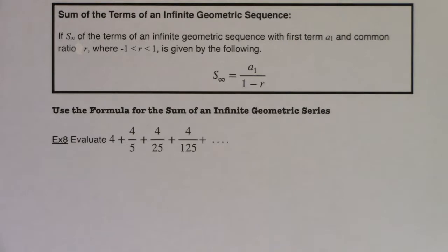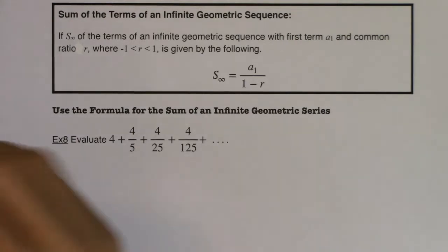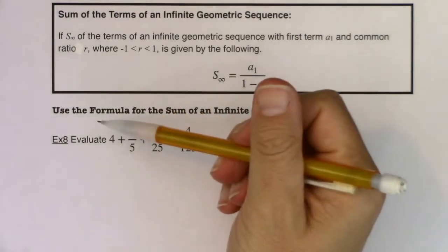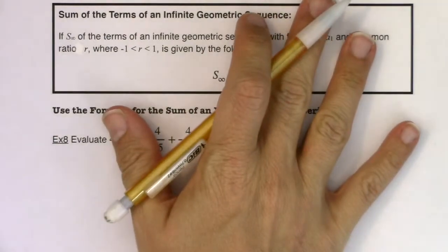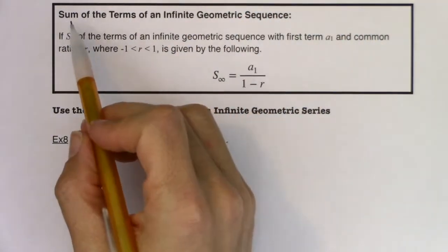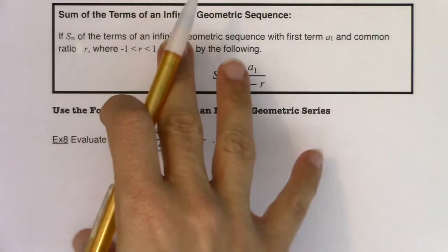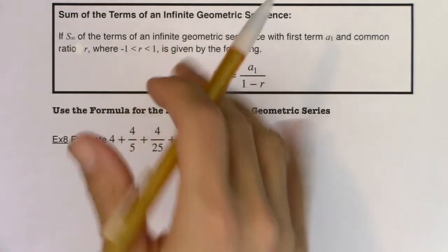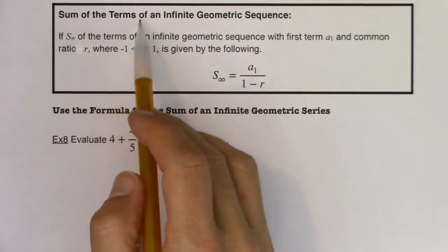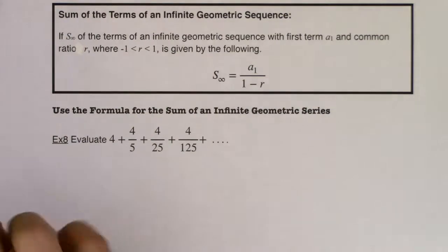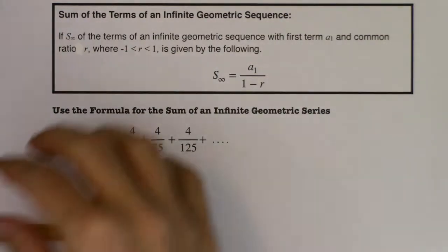Welcome to example 8. In examples 8, 9, and 10, we're really going to shift gears. We're going to go away from summing finite numbers of terms of a sequence to summing the terms of an infinite geometric sequence, which is kind of funky.